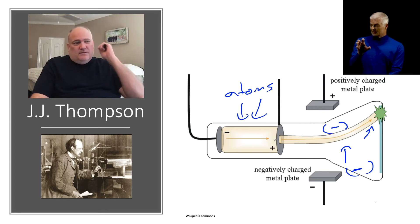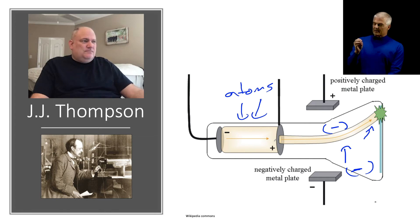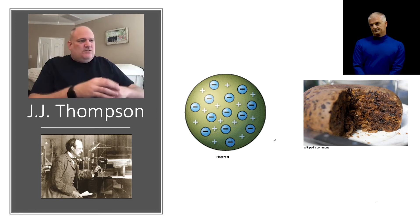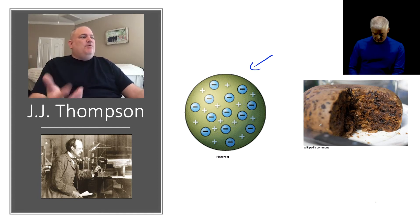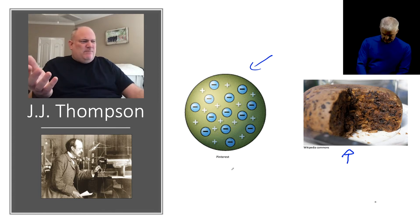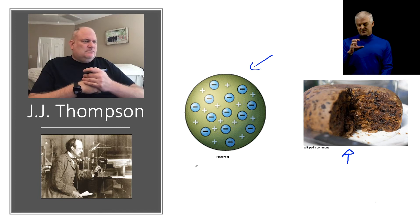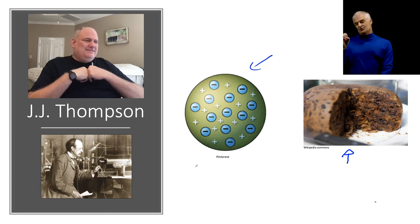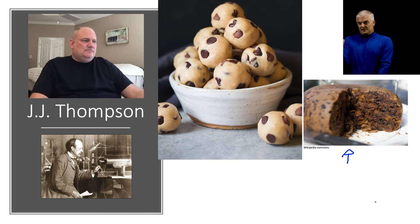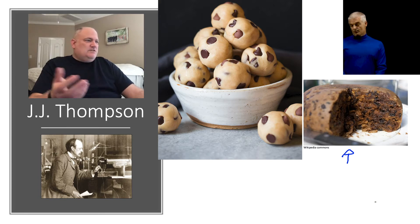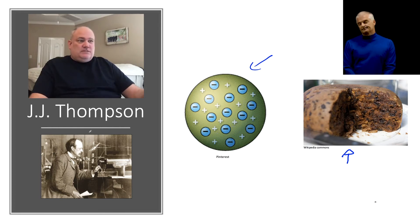Thomson still said atoms are spherical but made up of particles that have charge. He came up with the plum pudding model — think of chocolate chip cookie dough: the chips represent the negatively charged electrons, and the dough is positive. He didn't know about protons specifically, so he just thought the dough was positive and the chips were negative, interspersed throughout. It's a big improvement over the solid billiard ball model, but it's not quite right.